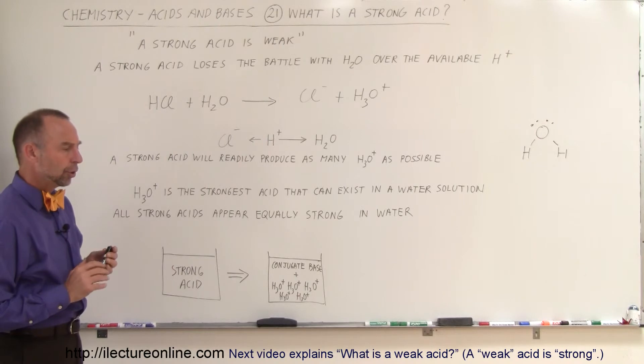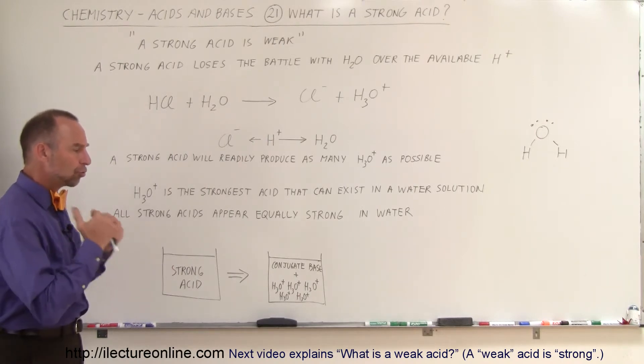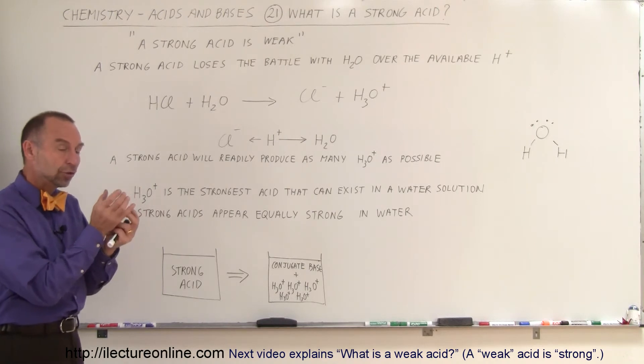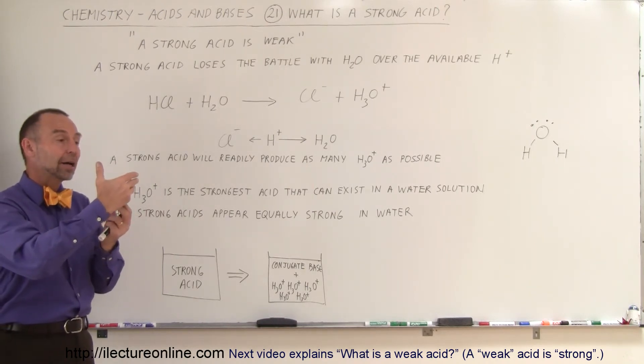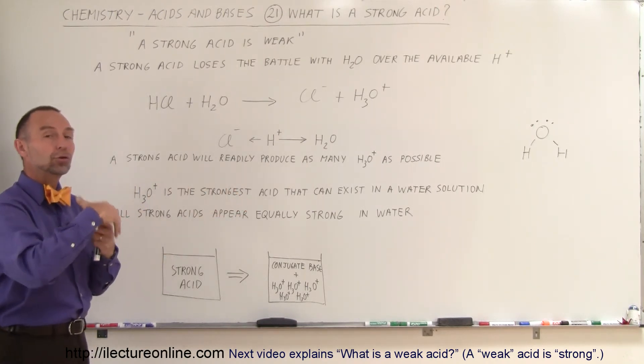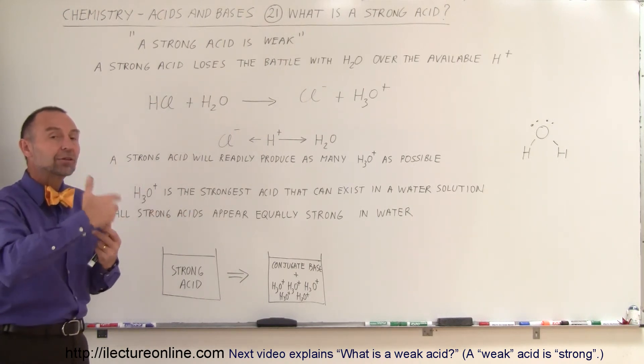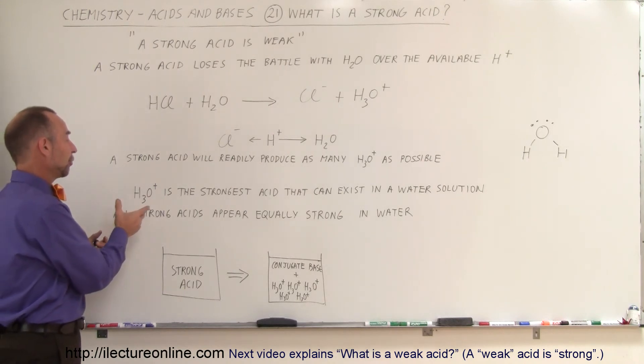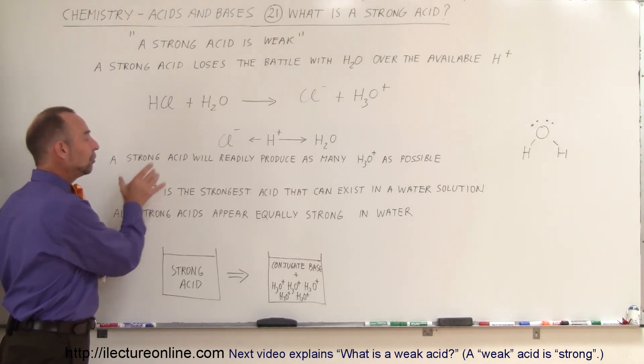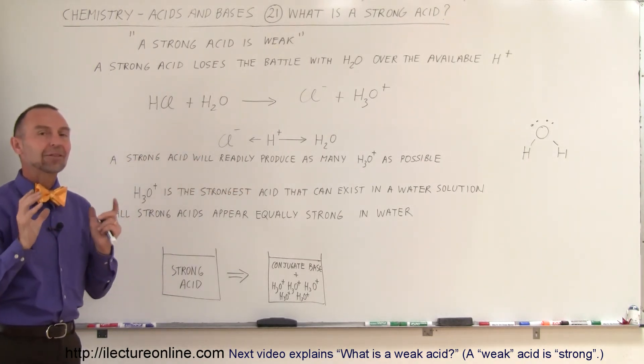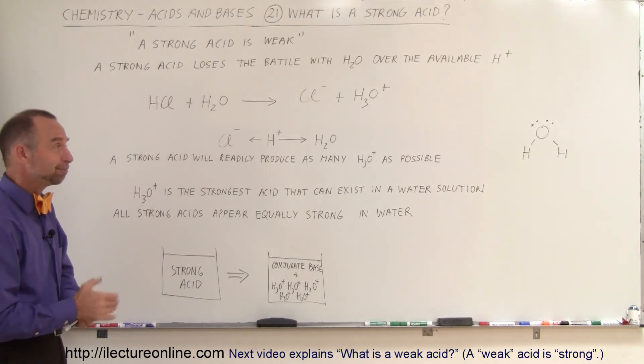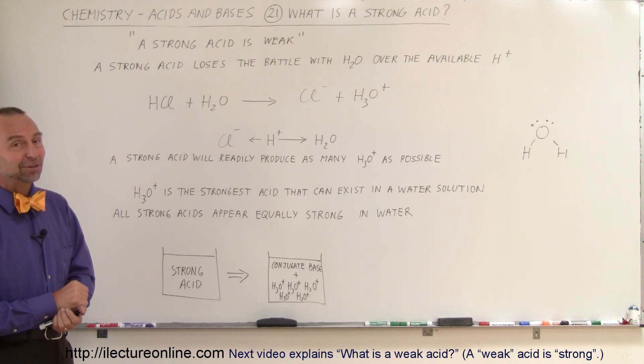So another way of looking at it is a strong acid is an acid that will take every one of its molecules and take the hydrogen ion and donate it to a water molecule to turn into a hydronium ion. So there will typically be a 100% conversion, or nearly so as far as possible, a 100% conversion of hydrogen ions into hydronium ions, and that's what makes it a strong acid. And that's the definition of a strong acid.